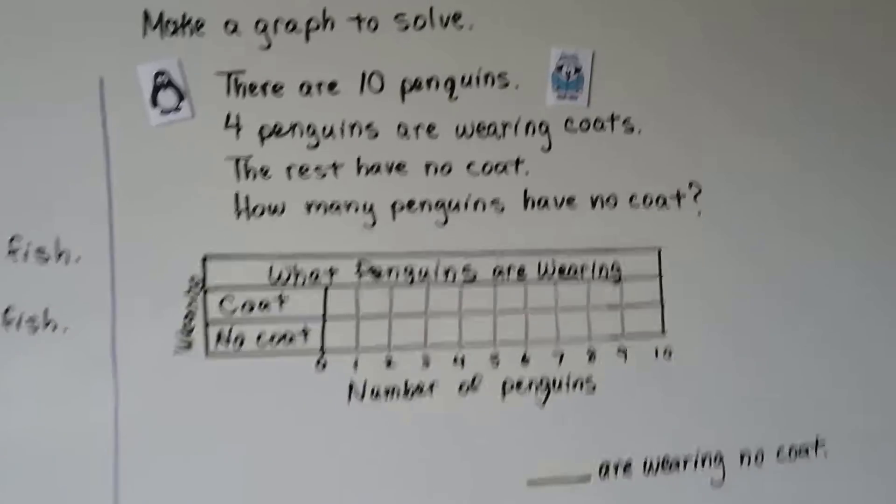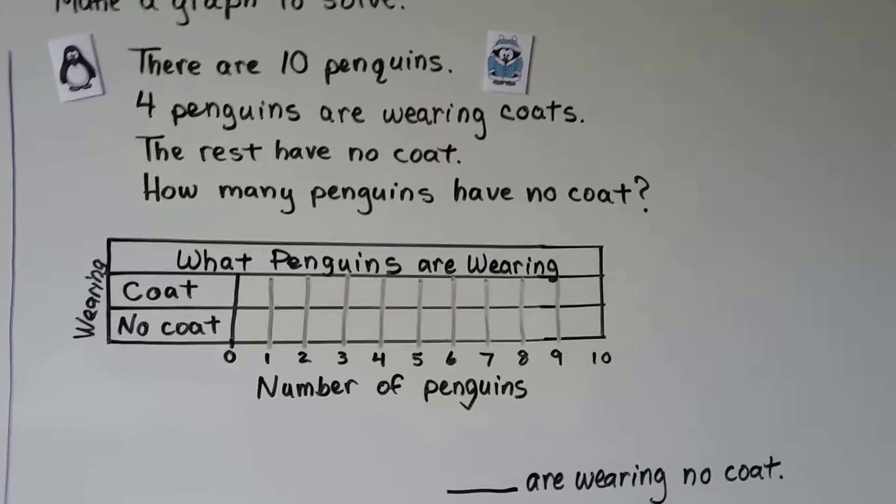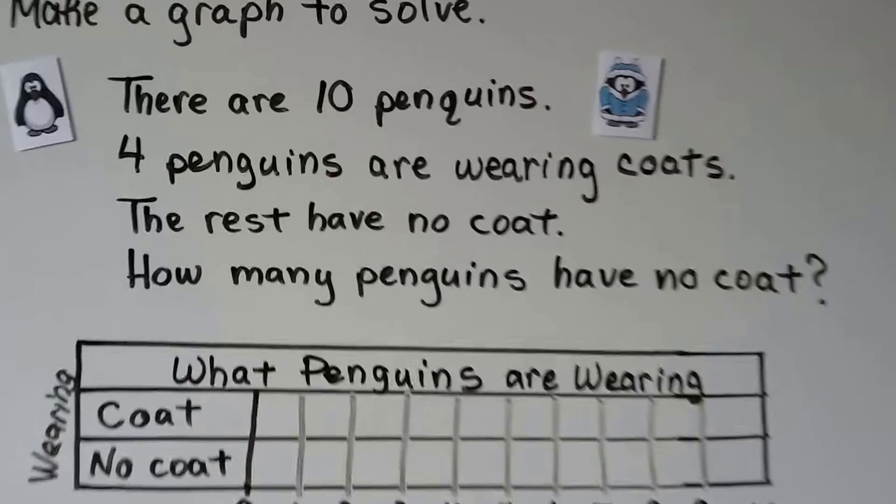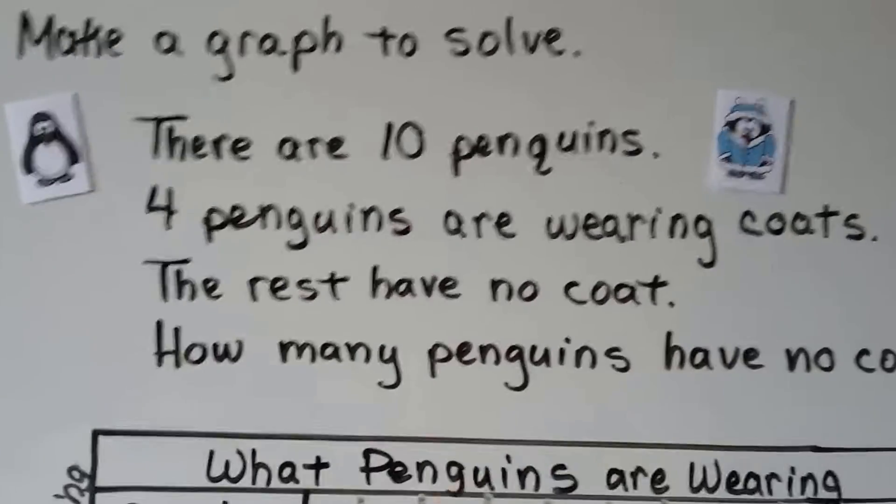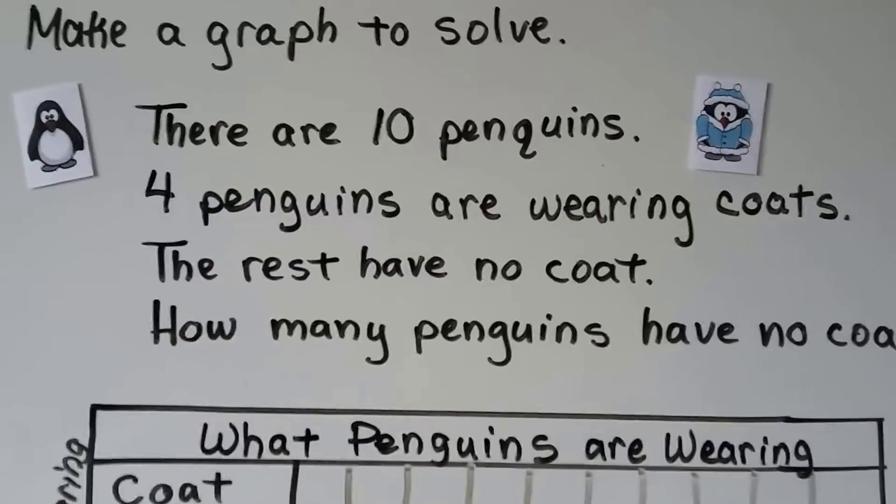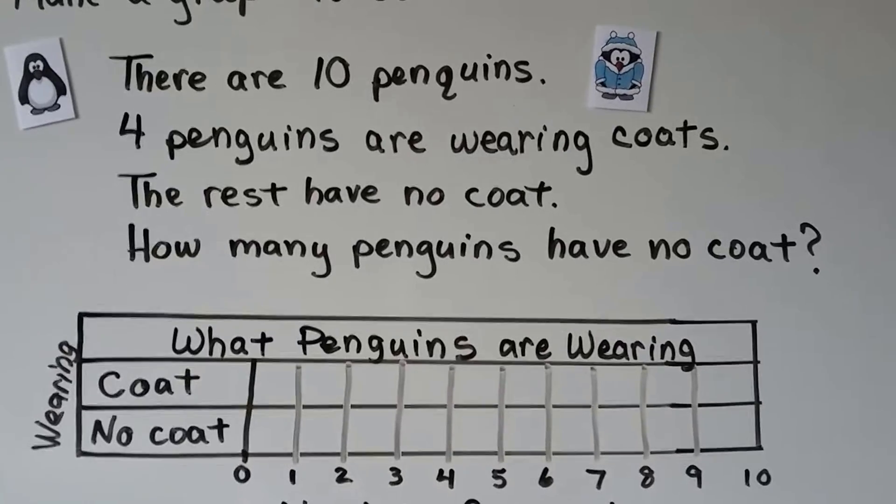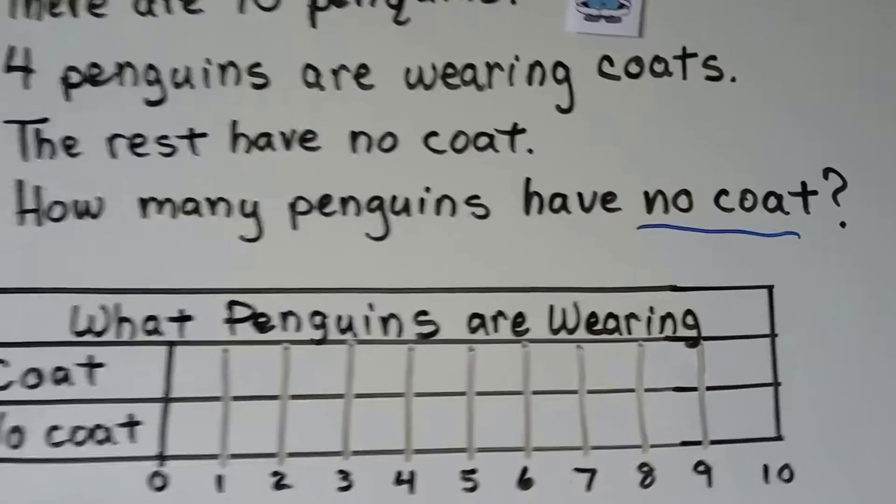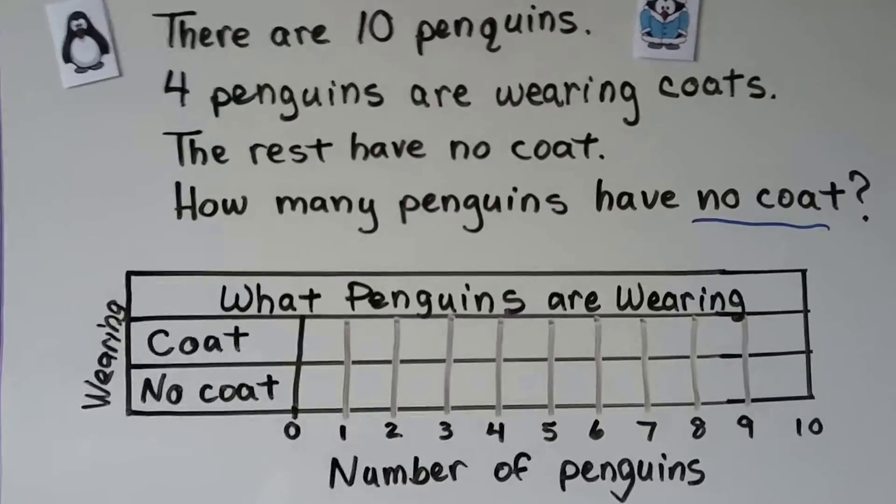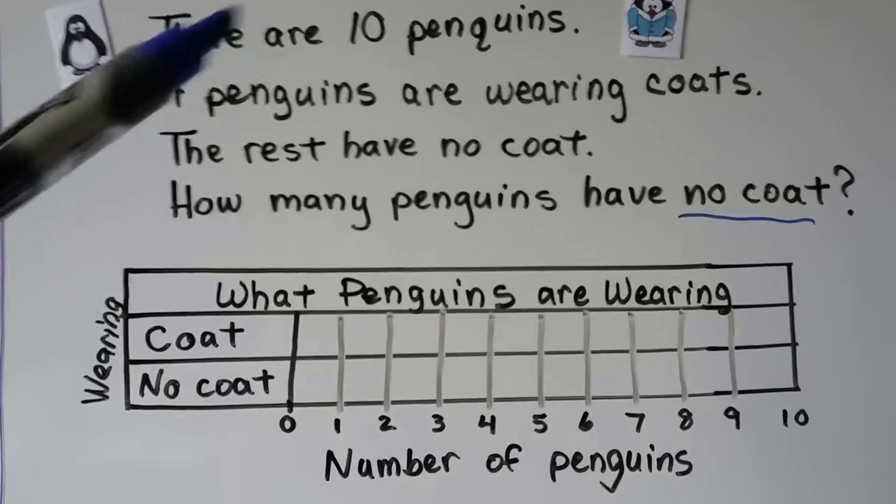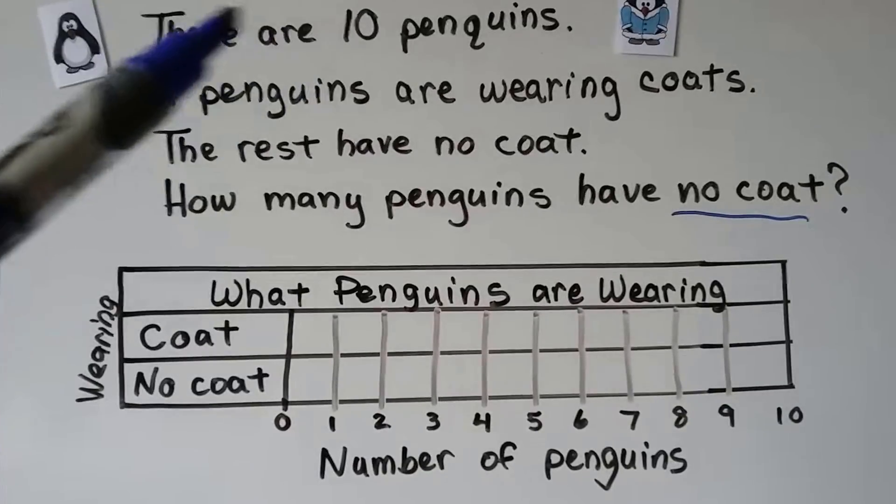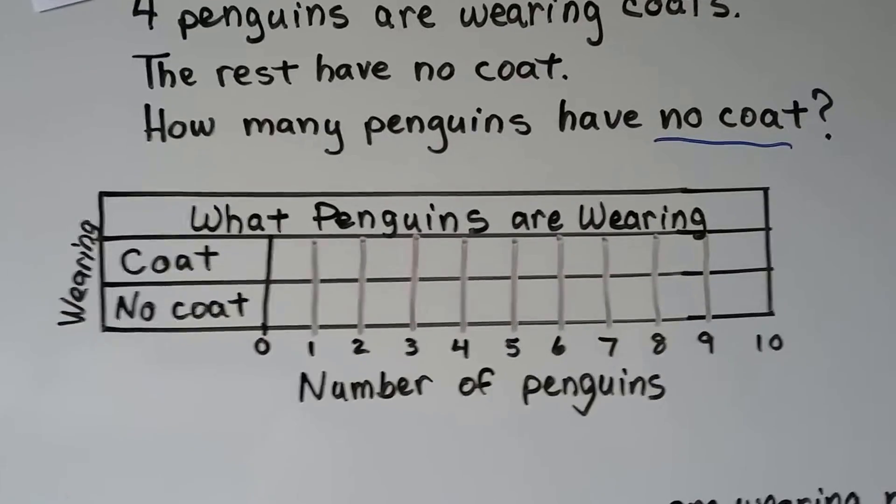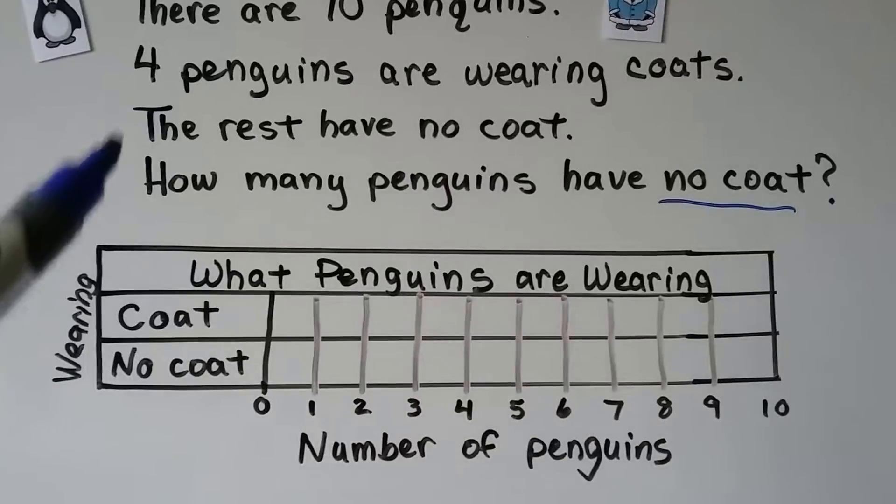Let's do another one. This one says make a graph to solve. There are ten penguins. Four penguins are wearing coats. Look at that. See a little penguin wearing a coat? The rest have no coat. How many penguins have no coat? So what are we looking for? We're looking for how many penguins have no coat? And what information are we going to use? Well, we're going to use that there are ten penguins in all and four are wearing coats. And what strategy will we use? We're going to make a bar graph because that's what the video is about. And we can start filling in the bar graph.